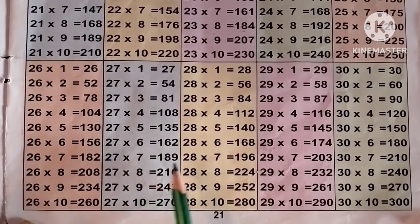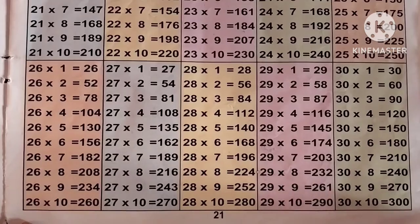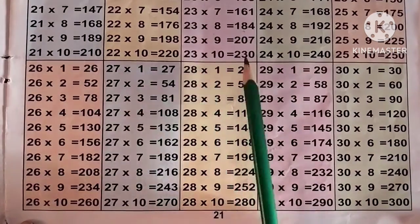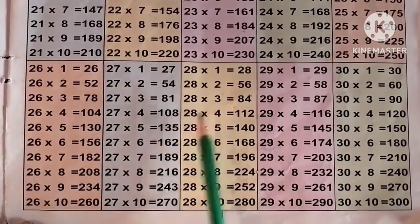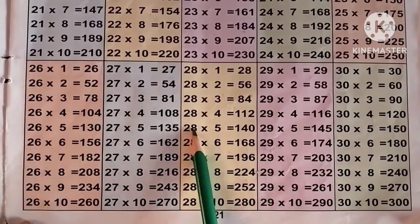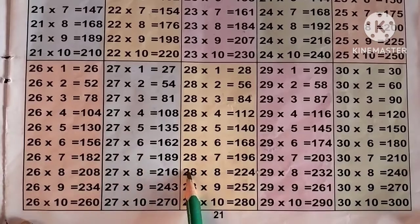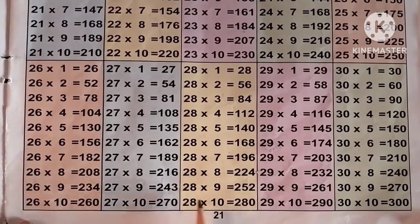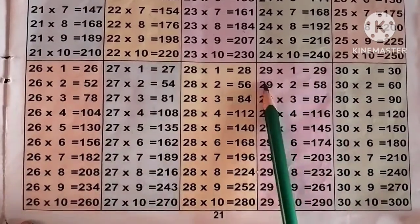27 8s are 216, 27 9s are 243, 27 10s are 270. Now the table of 28: 28 9s are 252, 28 10s are 280.